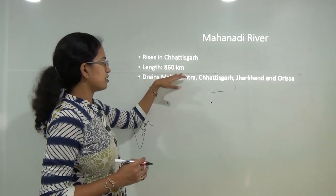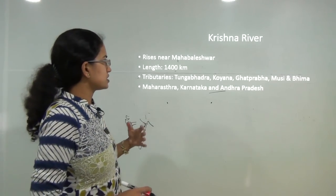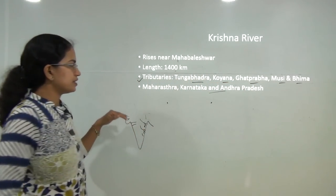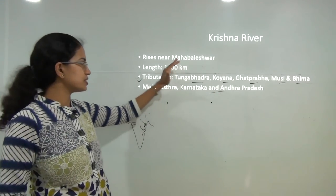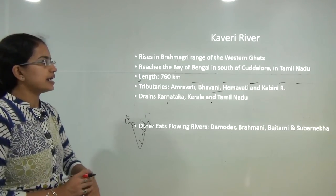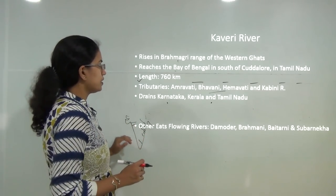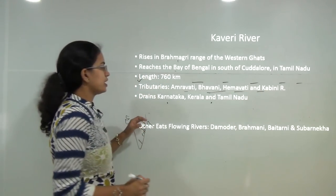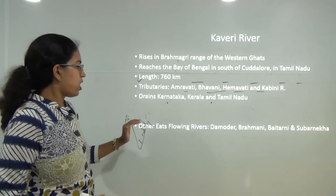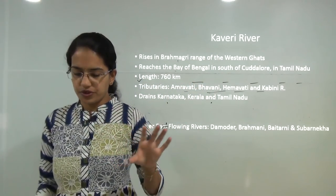The Mahanadi rises in Chhattisgarh, is around 860 km long, and drains Maharashtra, Chhattisgarh, Jharkhand, and Odisha. The Krishna river rises at Mahabaleshwar; its tributaries are Tungabhadra, Koyna, Ghataprabha, Musi, and Bhima, and it drains Maharashtra, Karnataka, and Andhra Pradesh with a length of around 1400 km. The Kaveri rises at Brahmagiri in the Western Ghats and reaches the Bay of Bengal at Cuddalore in Tamil Nadu. Its major tributaries are Amravati, Bhavani, Hemavati, and Kabini, draining Karnataka, Kerala, and Tamil Nadu. Other minor east-flowing rivers include Damodar, Brahmani, Baitarni, and Subarnarekha.